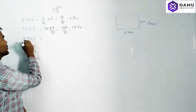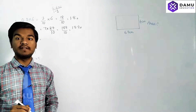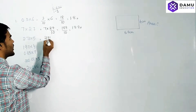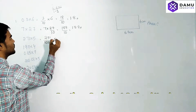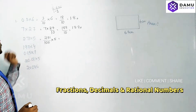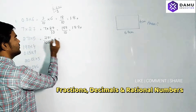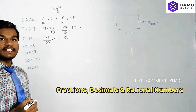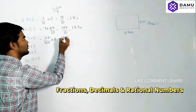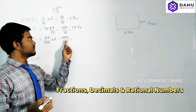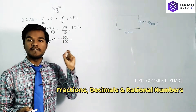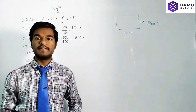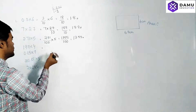Next: 2.71 into 5. After the point there are two decimal places, so we write 271 by 100 into 5. Multiplying: 5 ones are 5, 5 sevens are 35 carry 3, 5 twos are 10 plus 3 is 13. So 1355 by 100. Below there are two zeros, so from the right side leave two places and put the point — the answer is 13.55.